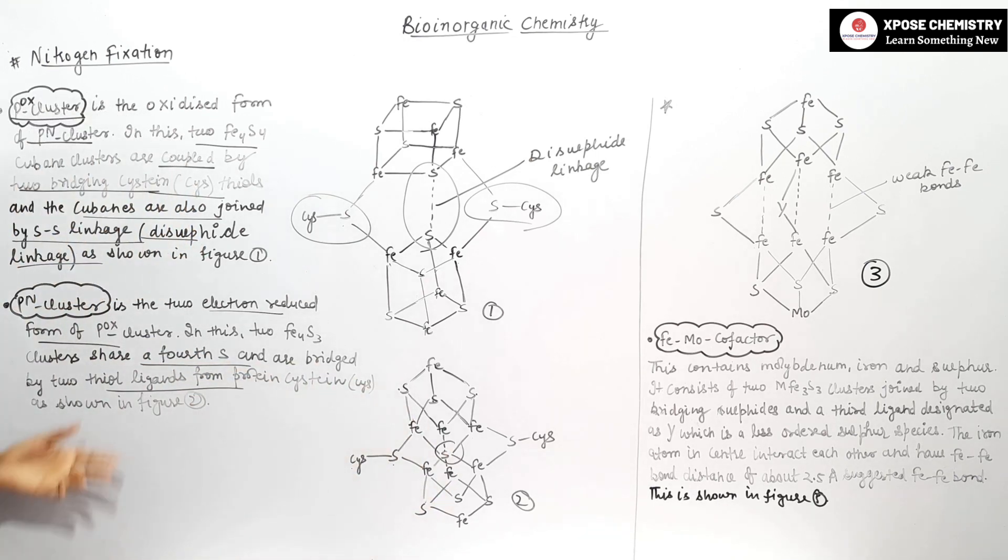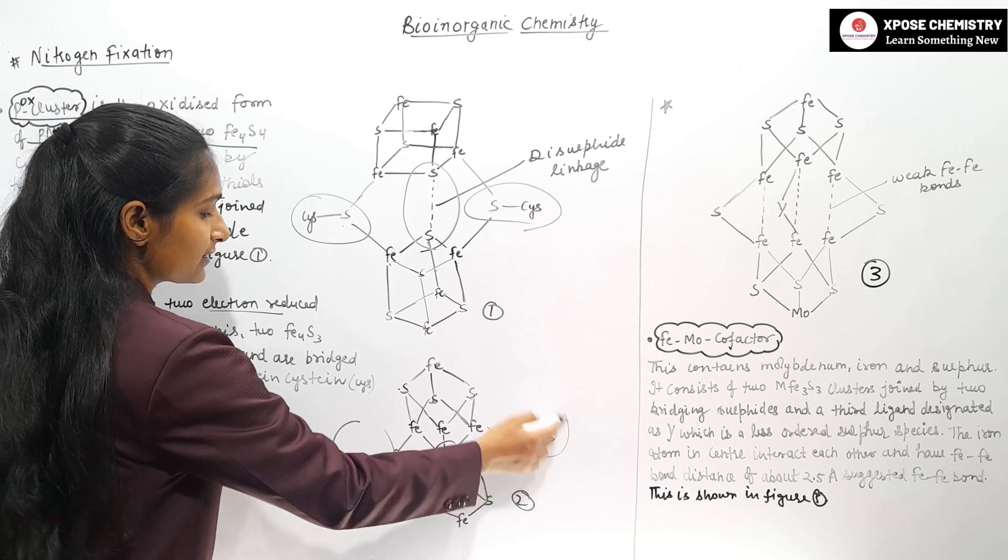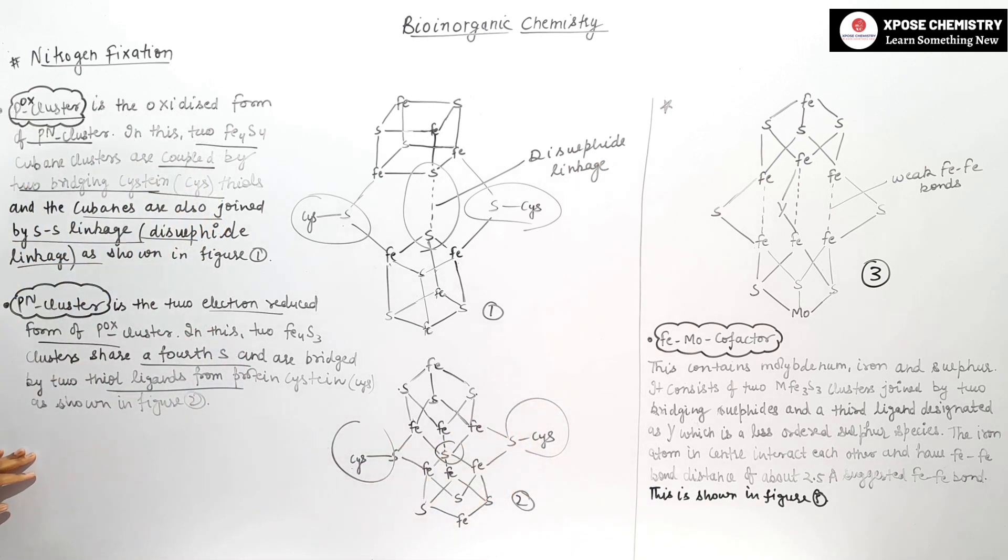The clusters are bridged by 2 thiol ligands from protein cysteine, as shown in figure.